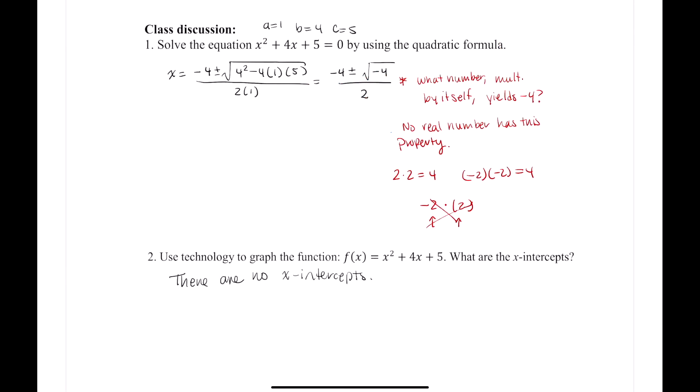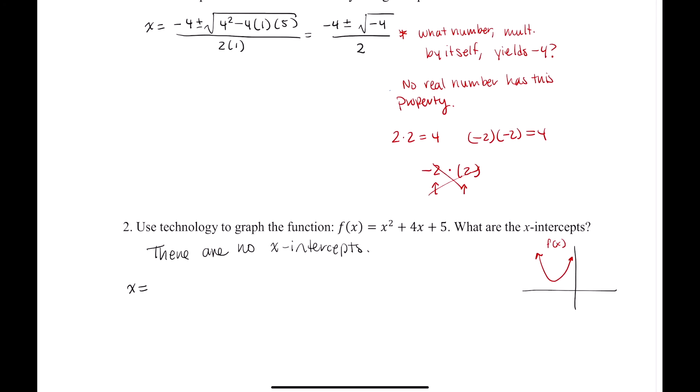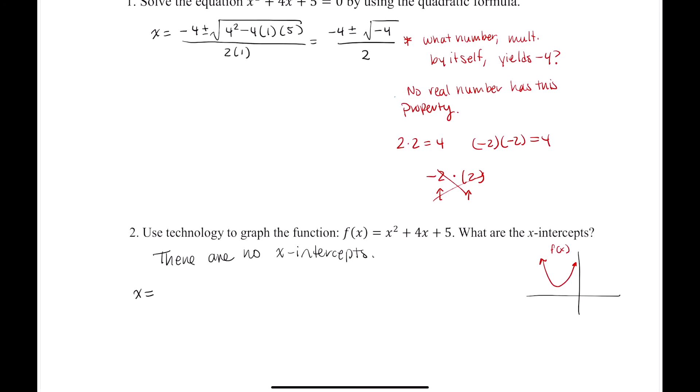There are no x-intercepts, and if we remember, we kind of had a graph that looked a bit like this. That was above the x-axis without x-intercepts. So let's continue. We had x equals, and bear with me while I resize my page. We had x equals negative 4 plus or minus the square root of negative 4 divided by 2.